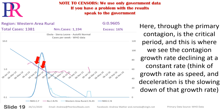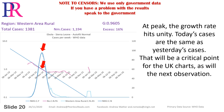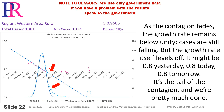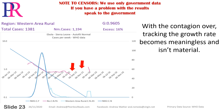Think of growth rate as speed and deceleration as the slowing down of that growth rate. At peak, the growth rate hits unity — today's cases are the same as yesterday's cases. After peak, with cases decreasing per day, the growth rate is below unity. Yesterday 100 cases, today 80 cases — a 20% decline or a growth factor of 0.8. As the contagion fades, the growth rate remains below unity; cases are still falling, but the growth rate itself levels off. It might be 0.8 yesterday, 0.8 today, 0.8 tomorrow. It's the tail of the contagion and we're pretty much done. With the contagion over, tracking the growth rate becomes meaningless and isn't material.